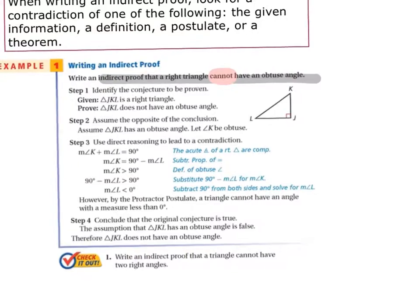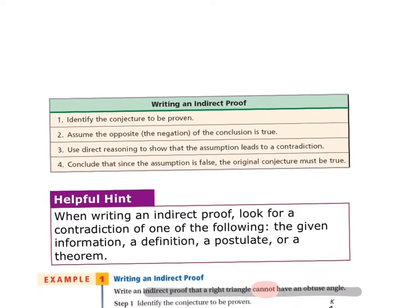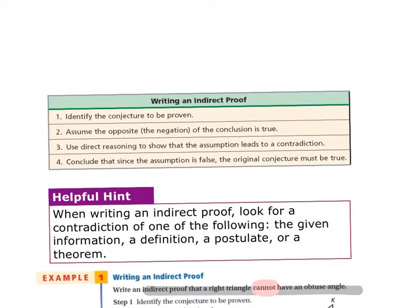To summarize the indirect proof steps: start by identifying the conjecture — what are you trying to prove? Then assume the opposite of the conclusion is true. Use direct reasoning to show that the assumption leads to a contradiction — basically prove that opposite to be wrong. Then conclude that the assumption is false, making the original conjecture true.